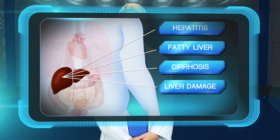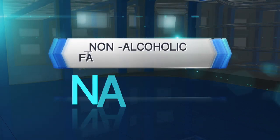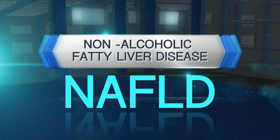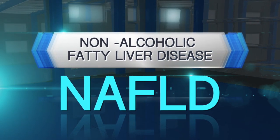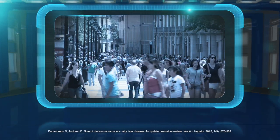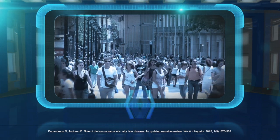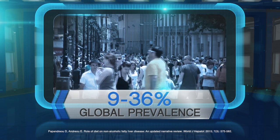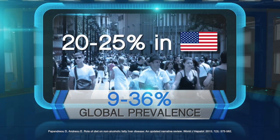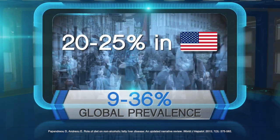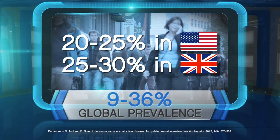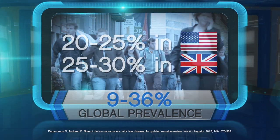Let's focus on non-alcoholic fatty liver disease. Non-alcoholic fatty liver disease, or NAFLD, is the buildup of extra fat in the liver of people who drink little or no alcohol. It is one of the most common forms of liver disease with a global prevalence of 9 to 36 percent. It is estimated that 20 to 25 percent of the U.S. population and 25 to 30 percent of the U.K. population have some form of NAFLD, with increasing future trends.